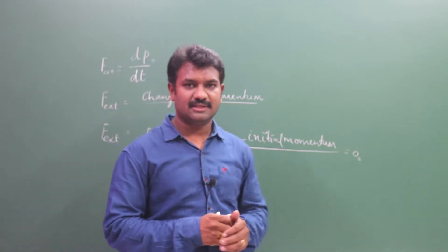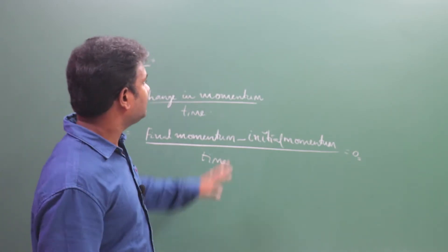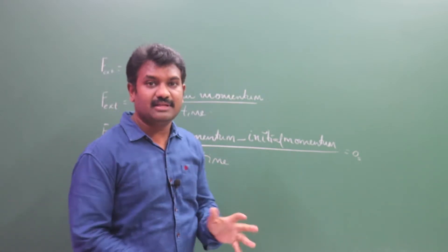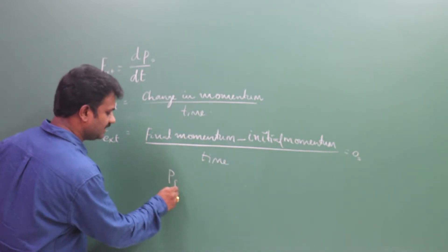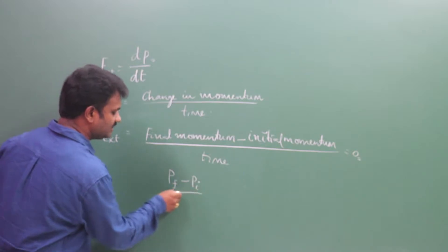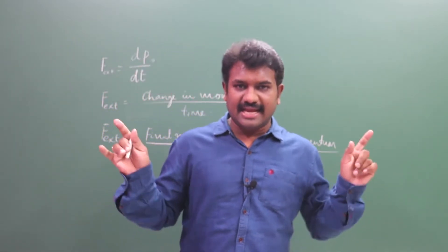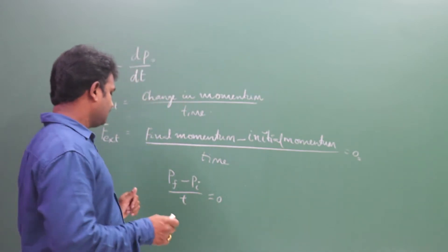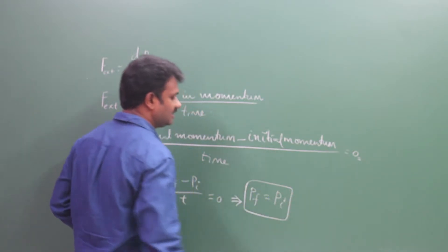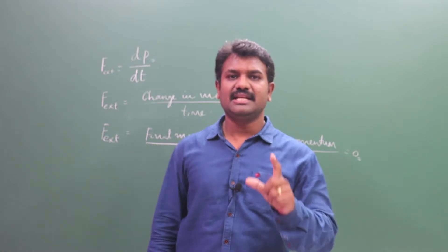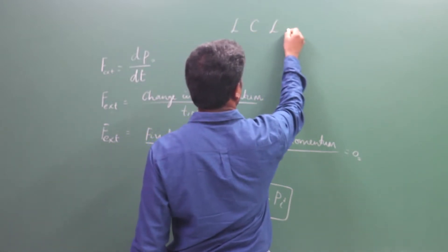But let us see this in reverse. If the force is zero — meaning I am not applying any force — then F external equals zero, and P final minus P initial by time equals zero. If no external force is acting on the system, then P final is equal to P initial. Final momentum of the system equals initial momentum of the system.